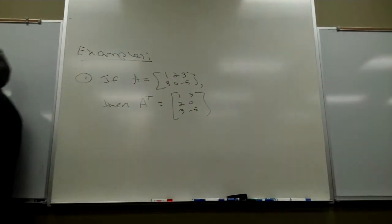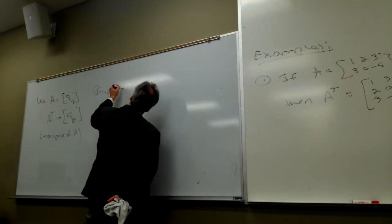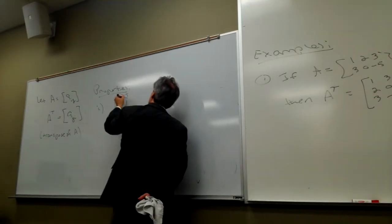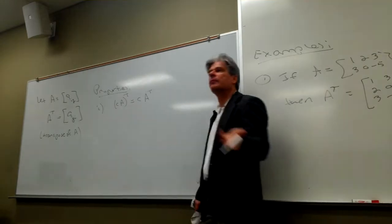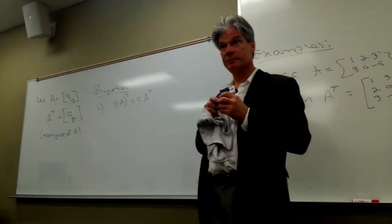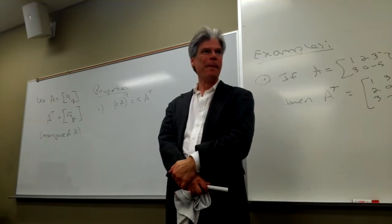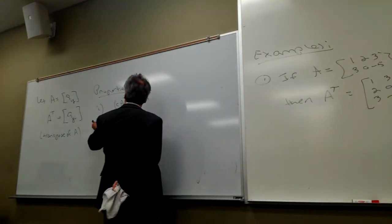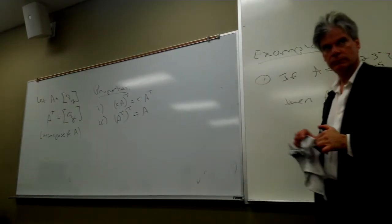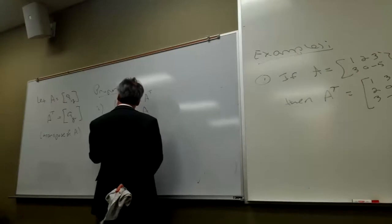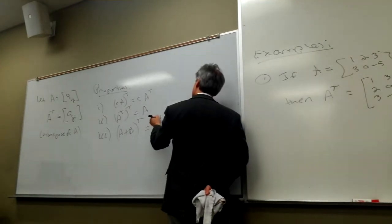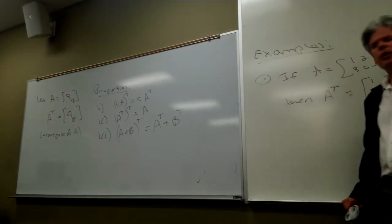Some basic ideas happen with transposes. Number one: if you transpose a constant times a matrix A, you're simply going to get a constant times the transpose of A. The constant gets pulled out of every entry anyway — scalar multiplication is component-wise multiplication. Also, if I were to transpose the transpose of A, I'm just going to get A right back.